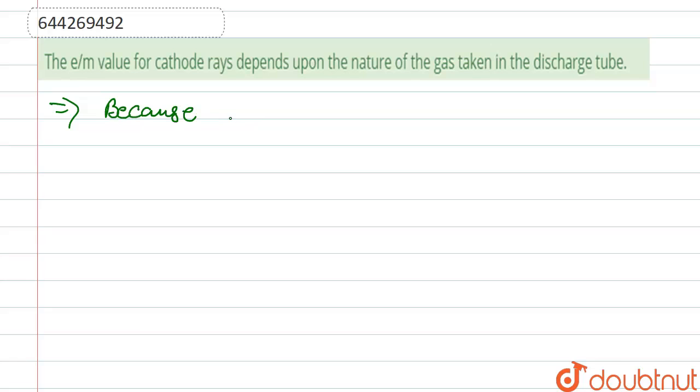because the cathode rays are positive charge particles. So positive particles are ions of gas molecules whose charge and mass vary according with their mass and charge they obtain.